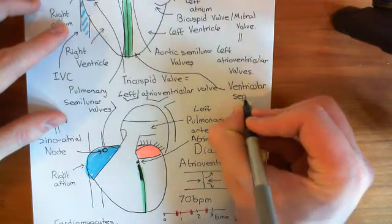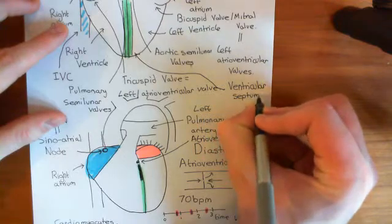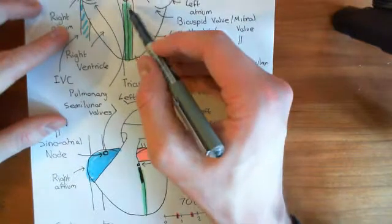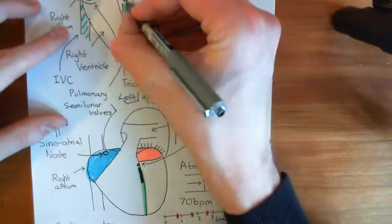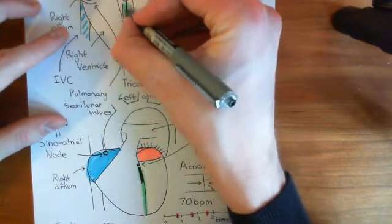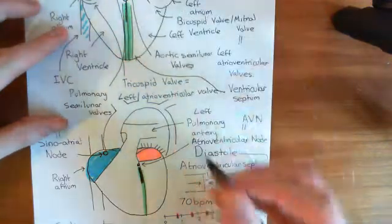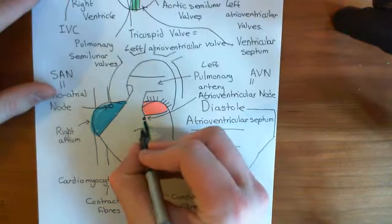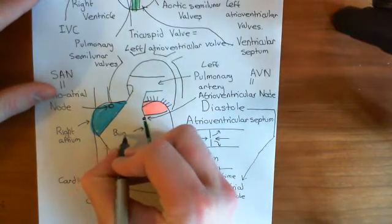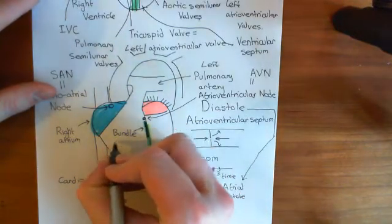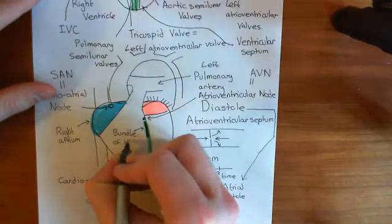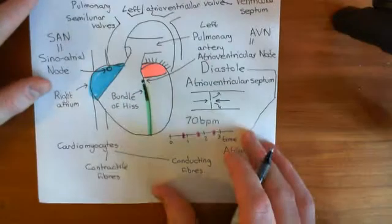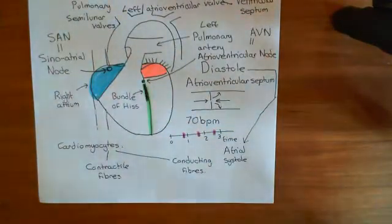There's a bundle of conducting cardiomyocytes — conducting fibres — spreading from the AV node down this ventricular septum. This is known as the bundle of His. His was a scientist — an anatomist or physiologist. The bundle of His spreads some way down this septum and splits into the right bundle branch and the left bundle branch, both still within the ventricular septum.